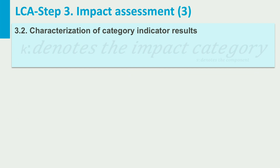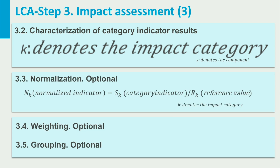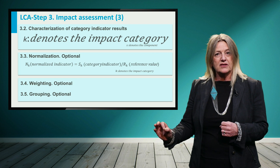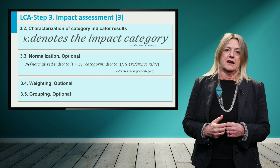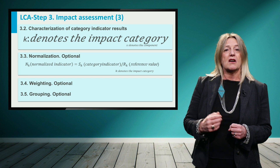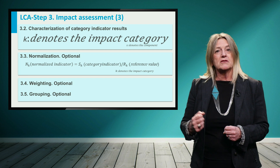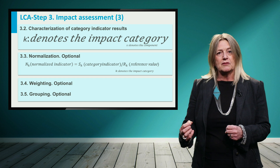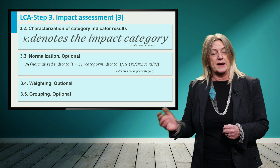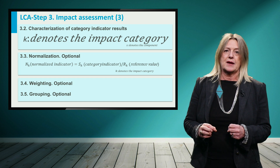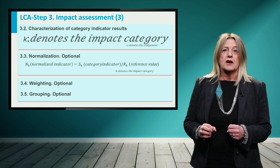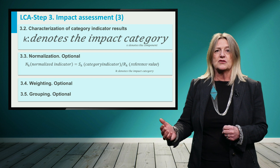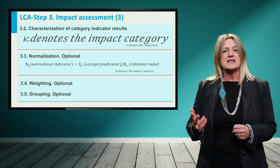Normalization, grouping and weighting are optional steps which aim to provide additional understanding of the magnitude and significance of each impact category. For example, normalized results are calculated relative to a reference value or system, allowing direct comparisons of alternative processes or products for specific impact categories. These steps are not commonly applied for process design due to the high level of aggregation of results. However, these types of results are preferred for communication and decision making.